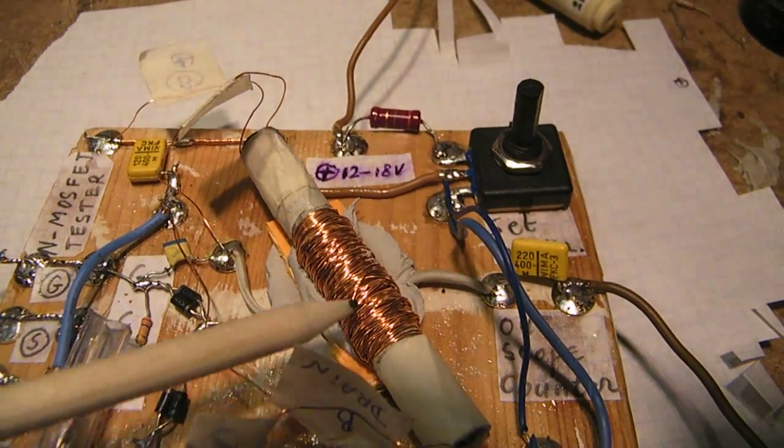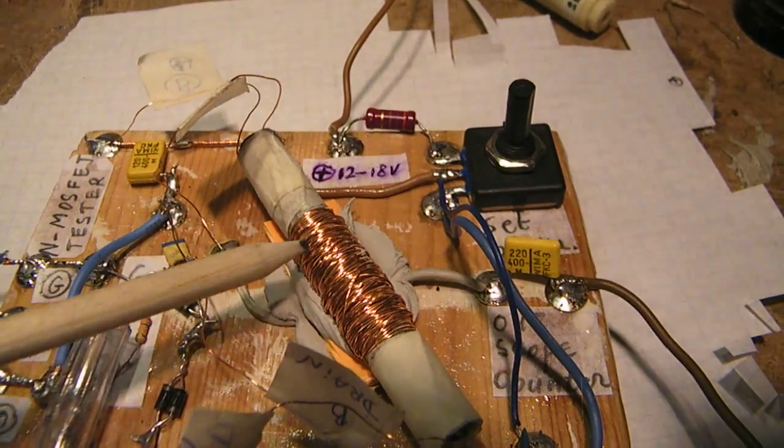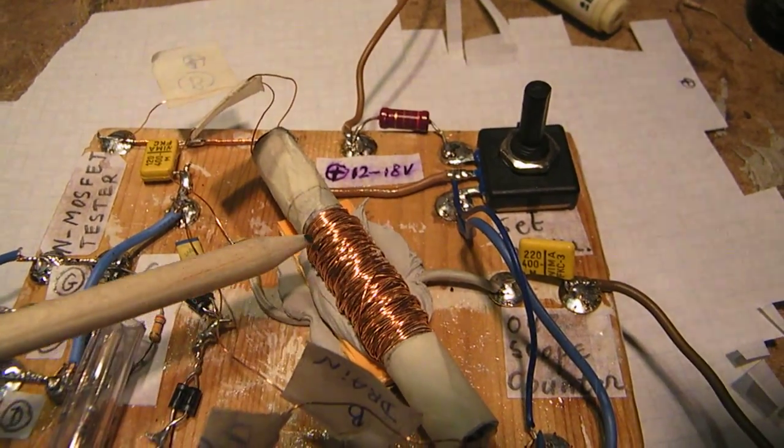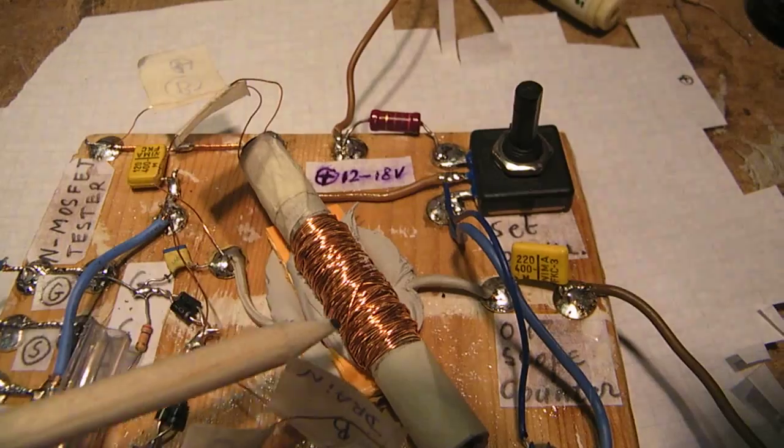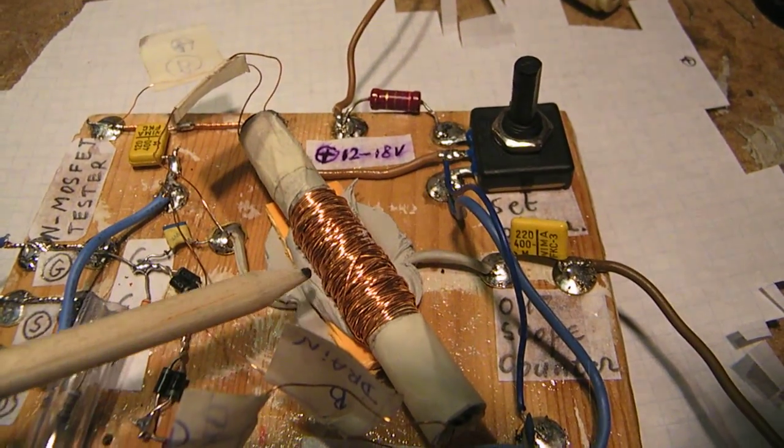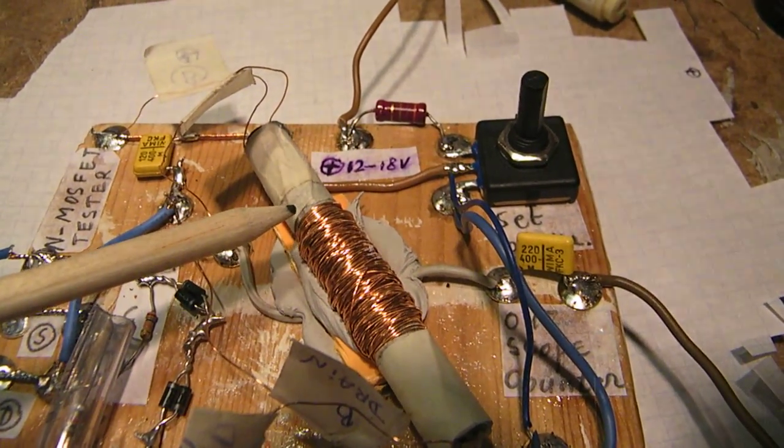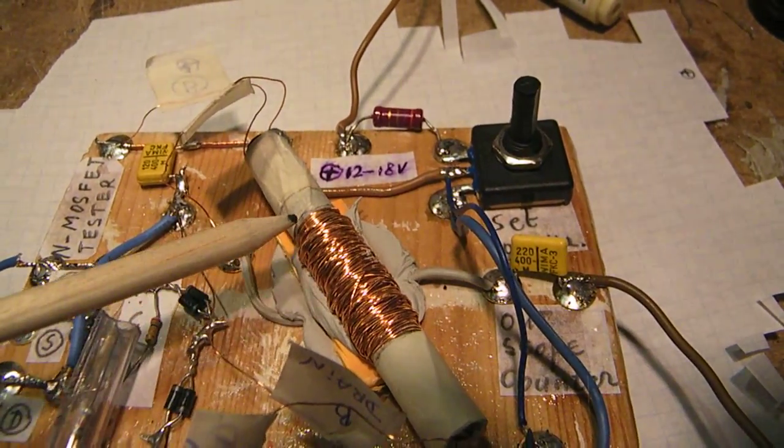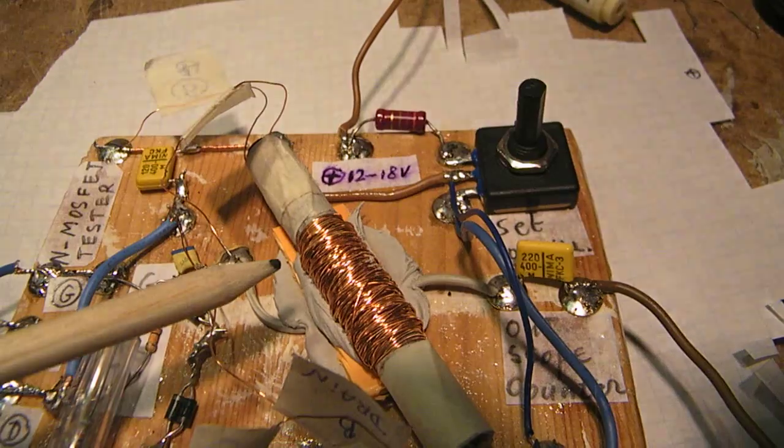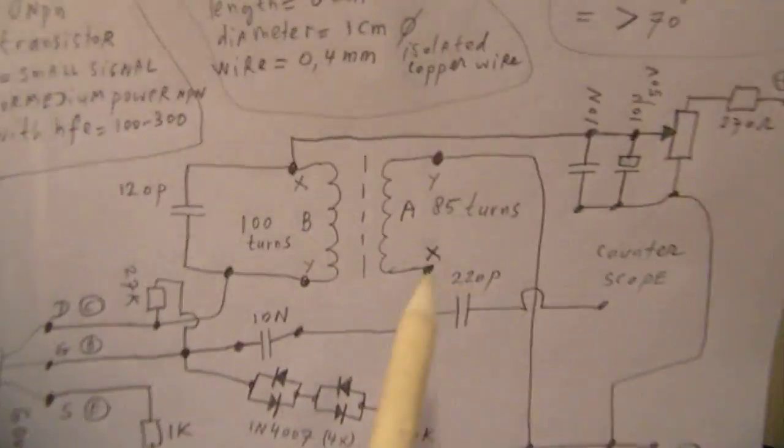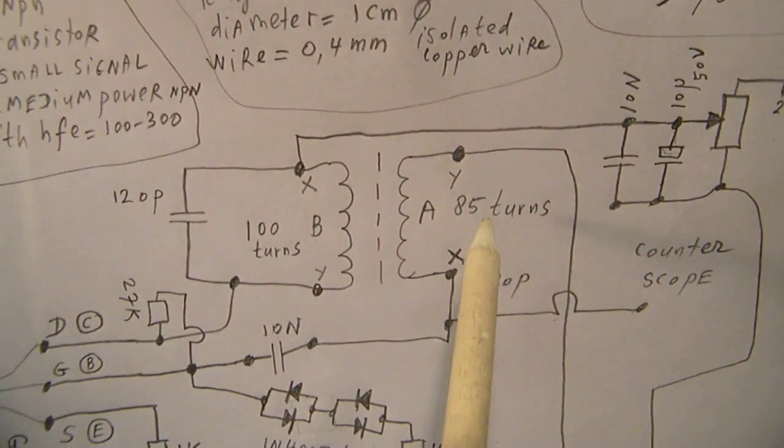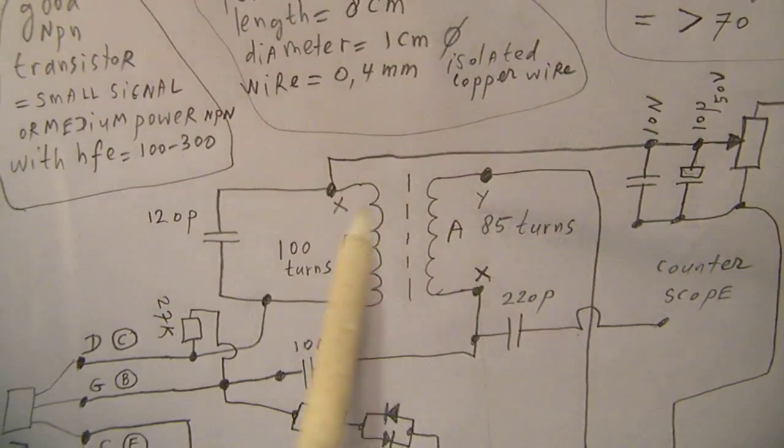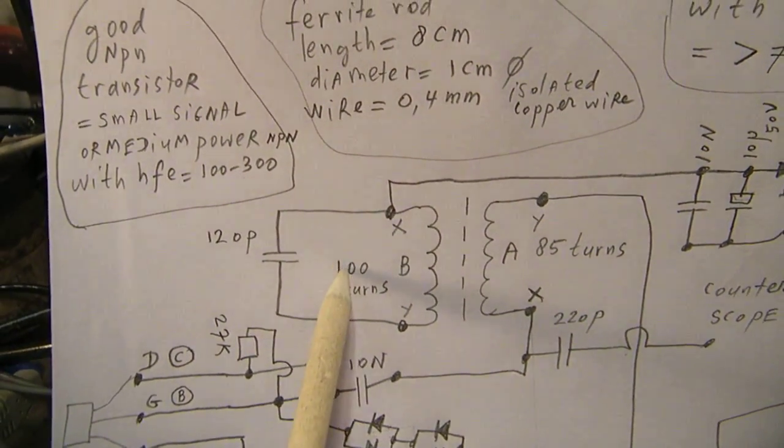Don't be afraid when you make it somewhat sloppy. That also has good properties because the internal capacitance gets lower when you wind this coil somewhat sloppy. Here are 85 turns on the coil and 100 turns.